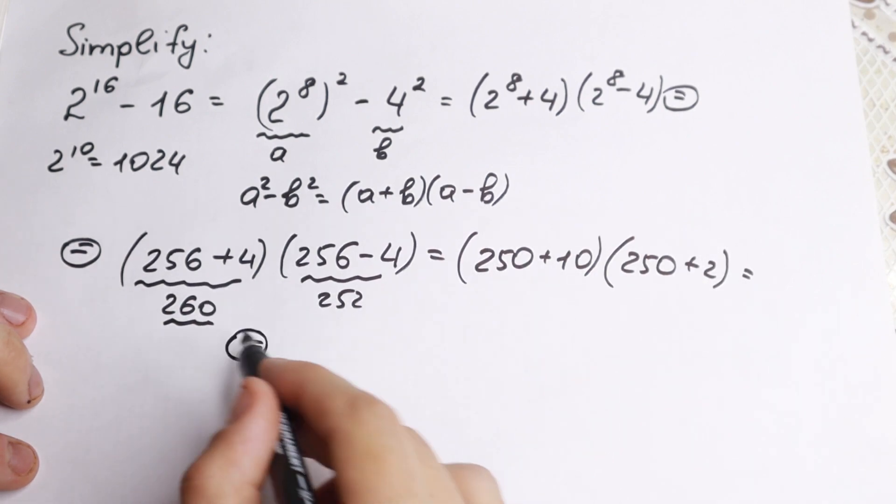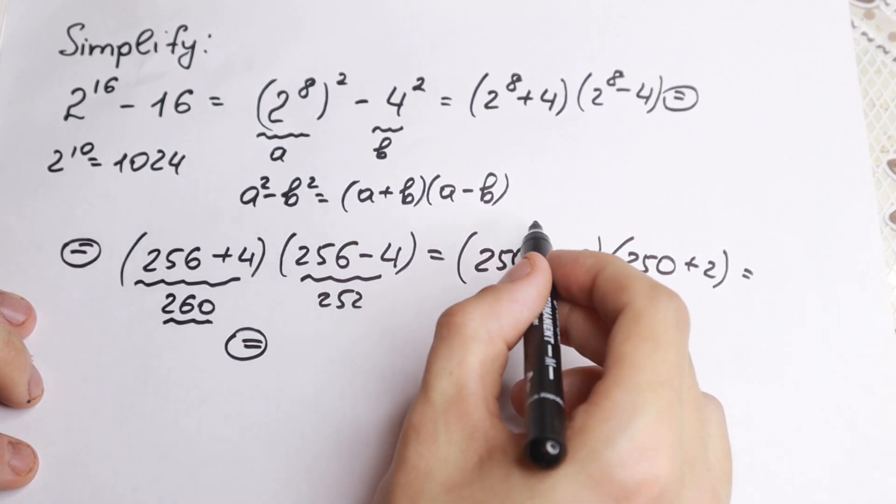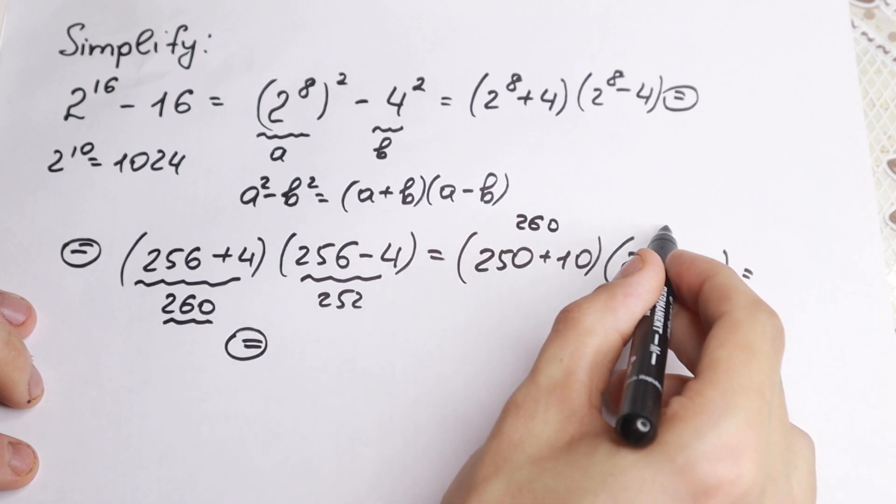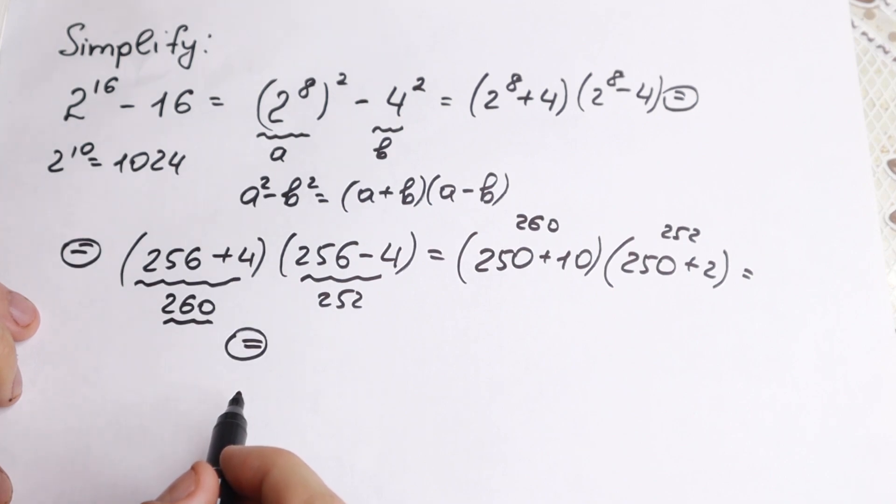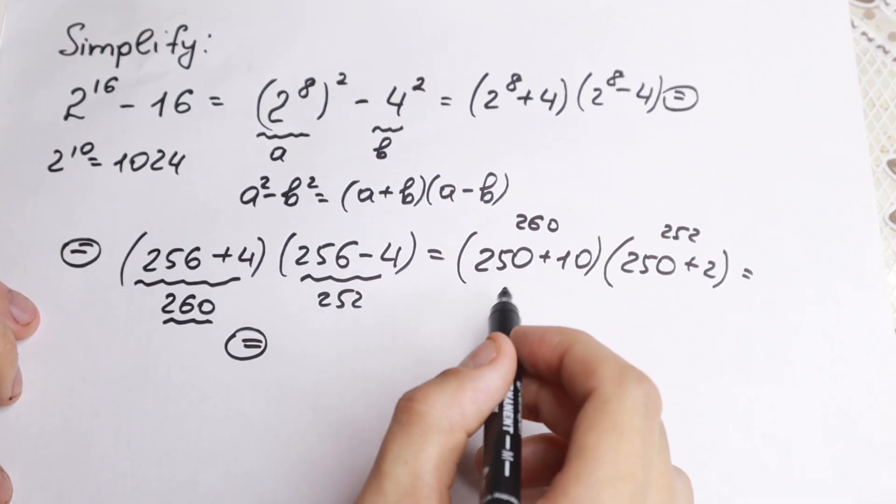And right now we can easily multiply it as parentheses by parentheses. This is our 260, this is our 252. But right now we can easily multiply it as parentheses times parentheses. So let's do this.